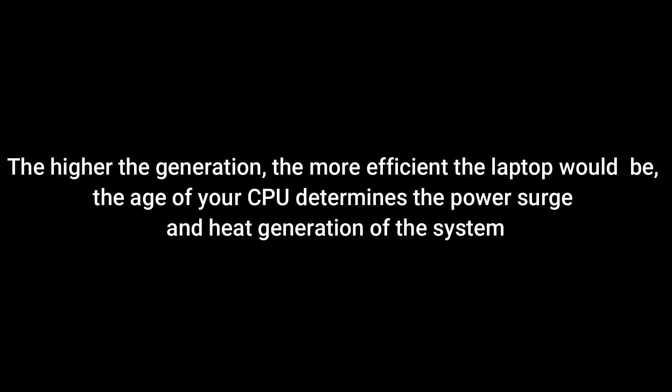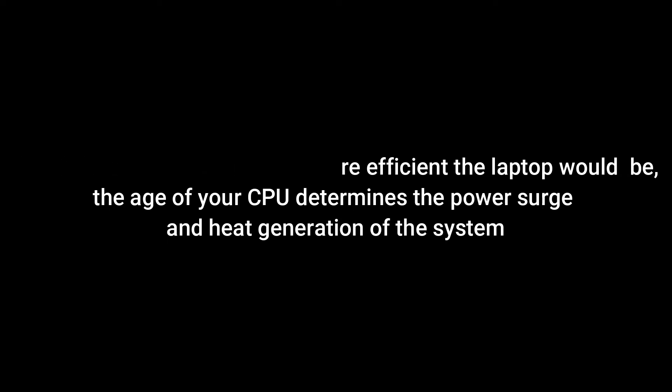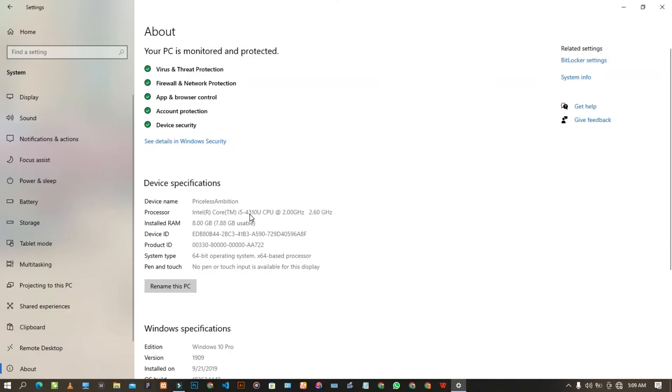We have first, second, third, fourth, fifth, sixth, seventh generations and so on. To know the generation, go to the same Settings and check the About section. Right there you see the model number, and from the model number you get to know the generation of your system. This particular system is a fourth generation — the model number starts from four. If it starts from five, three, or two, that's the generation of your system.